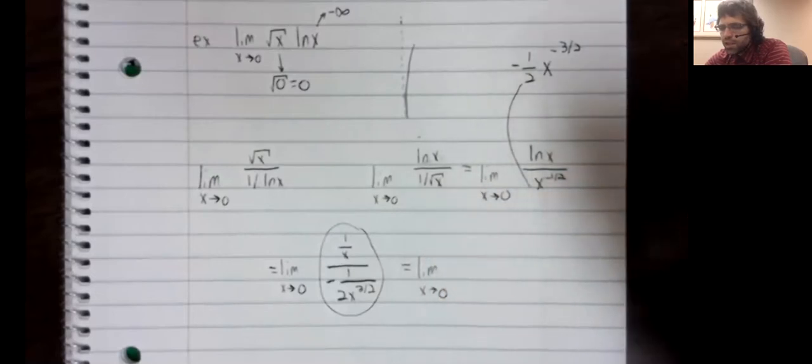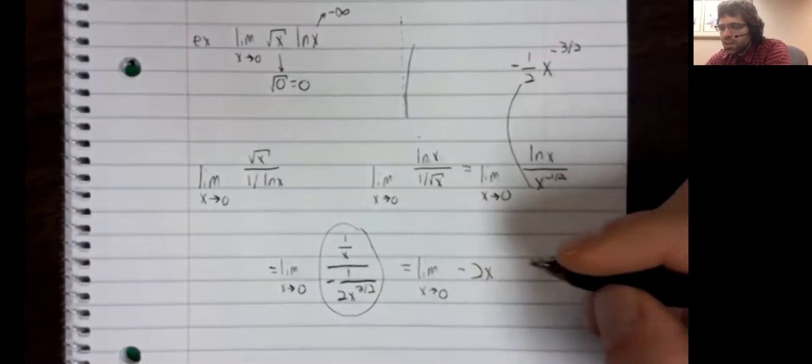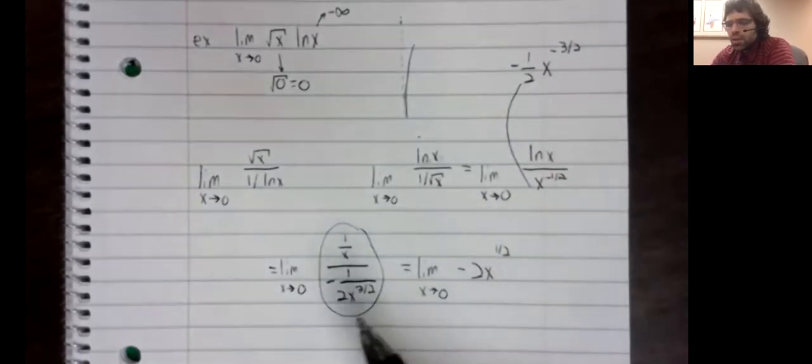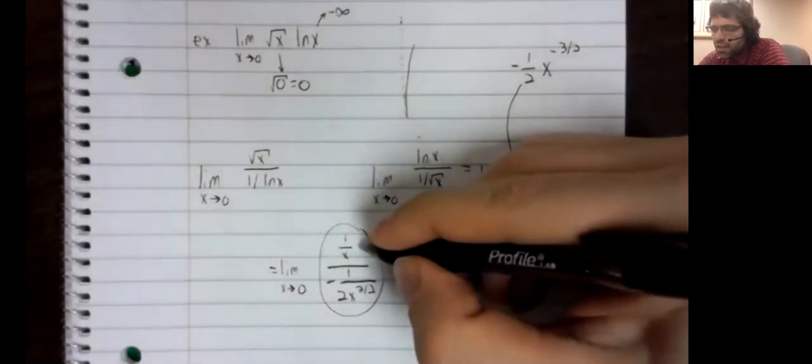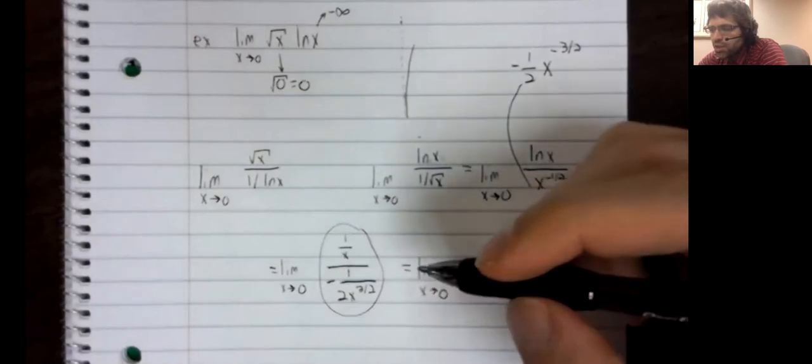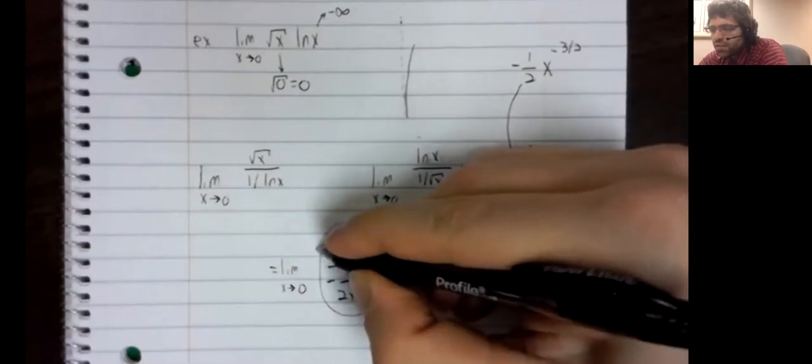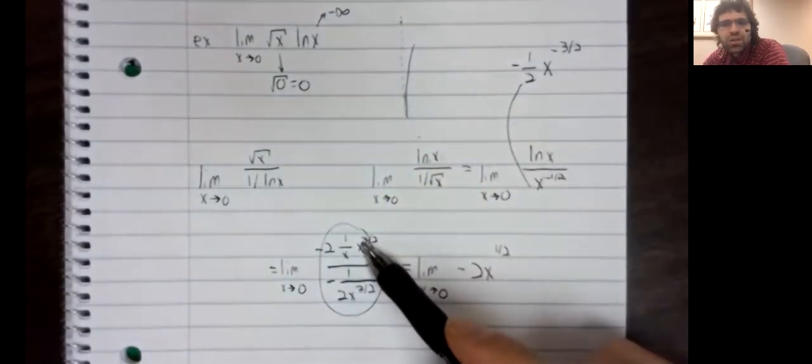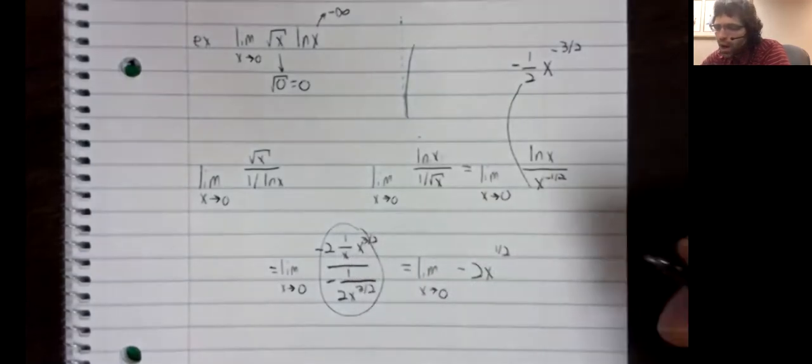And we get negative two x to the one half power. When we multiply the numerator, the denominator by its own reciprocal, of course it goes away. When we multiply the numerator by negative two x to the three halves, x to the three halves divided by x is x to the one half.